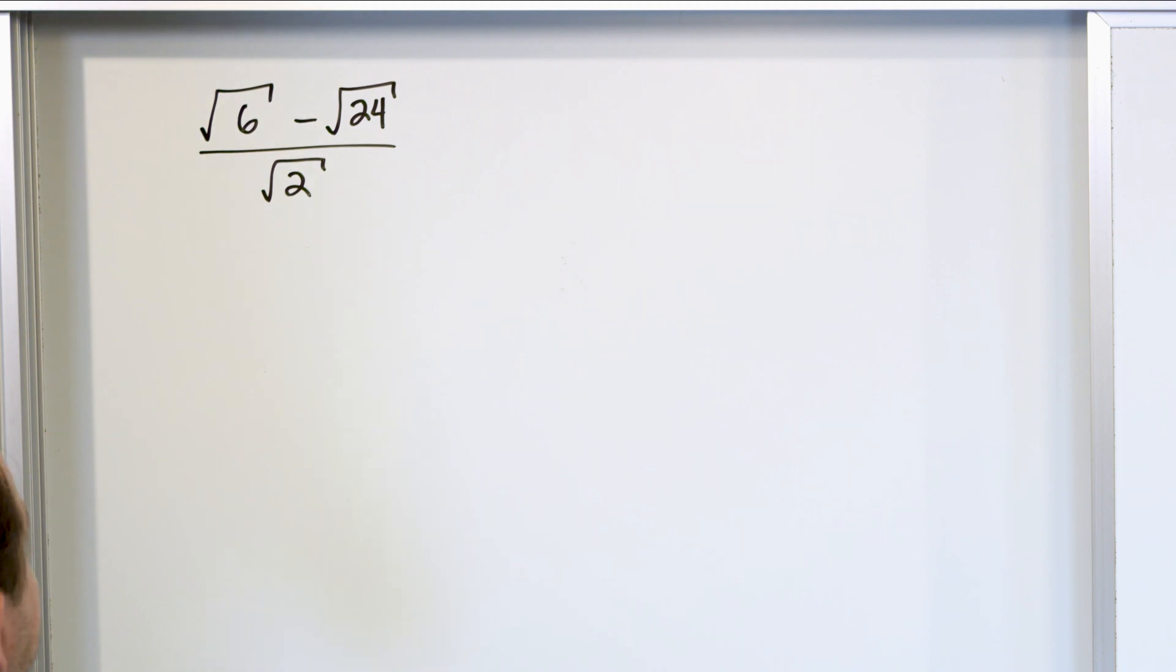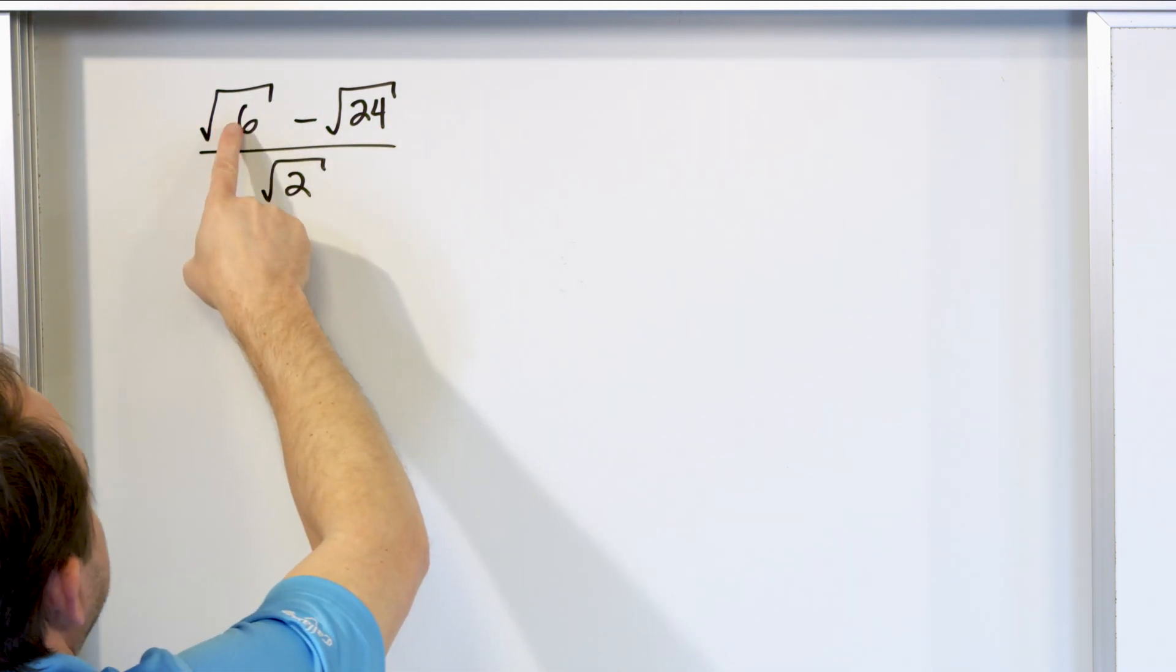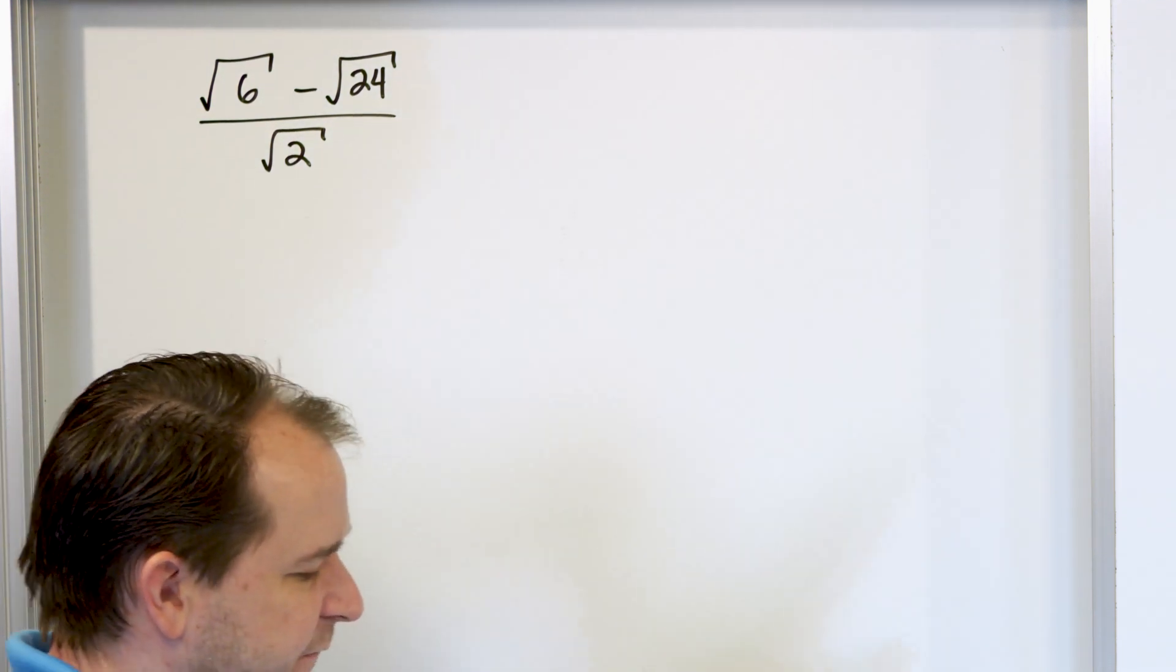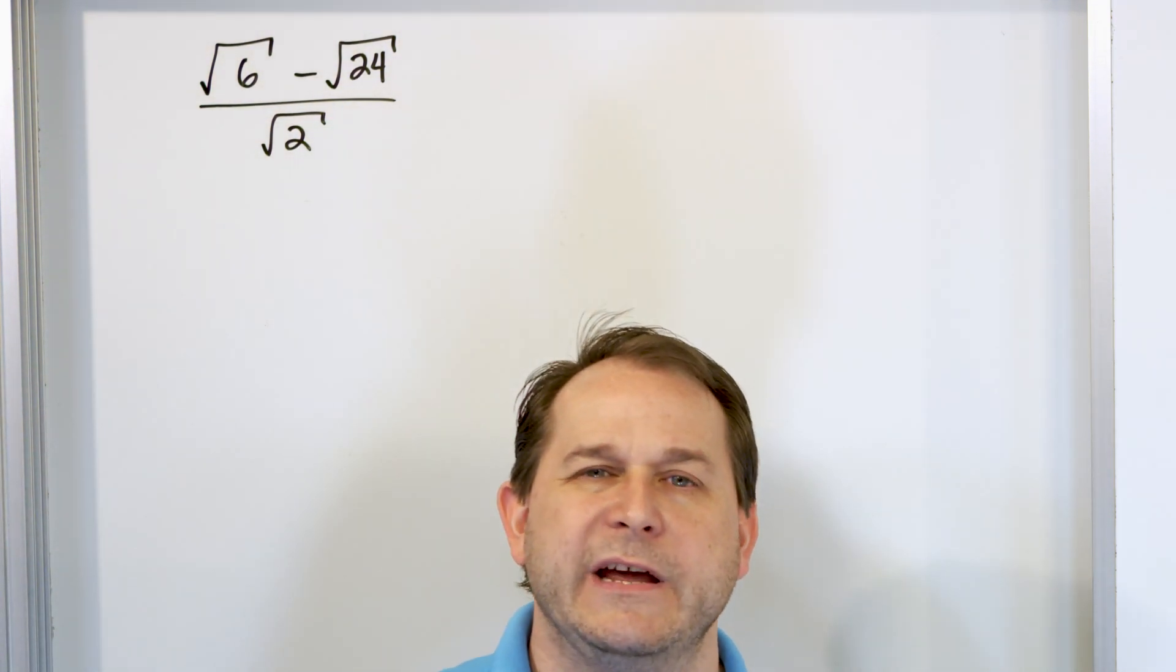We do not like the denominator being a square root of 2, but we also don't like the numerators because they're different radicals and we can't really subtract them. Let me give you a piece of advice here in the beginning.